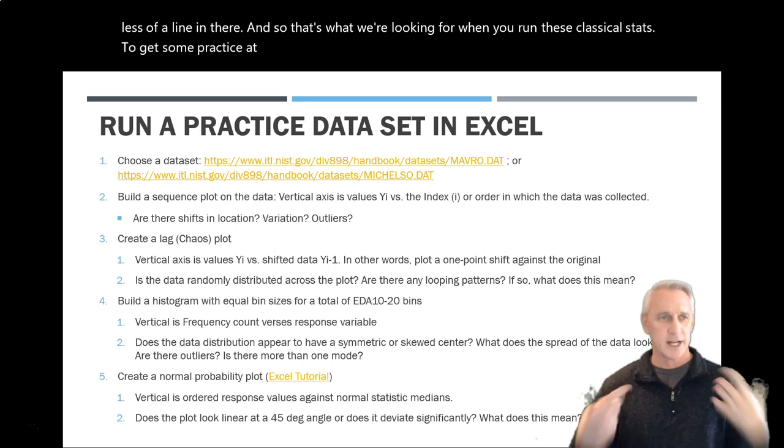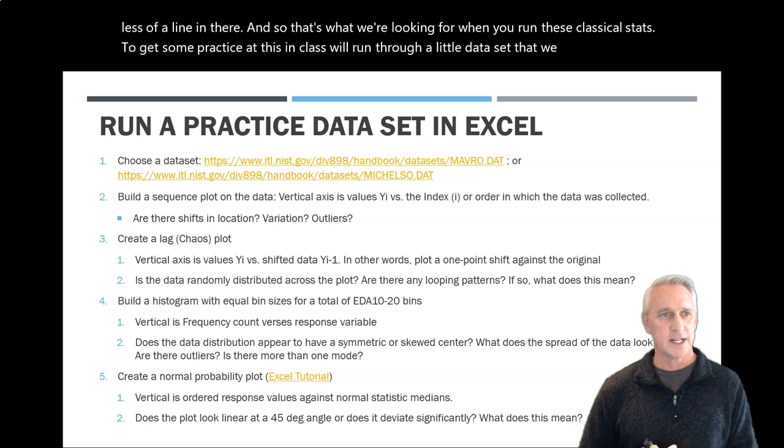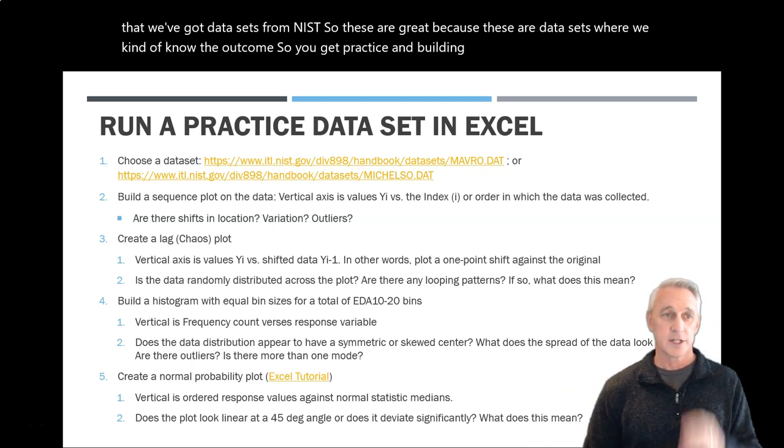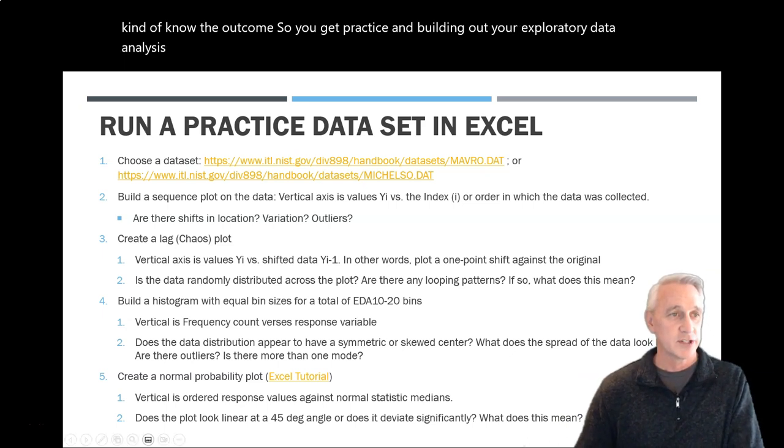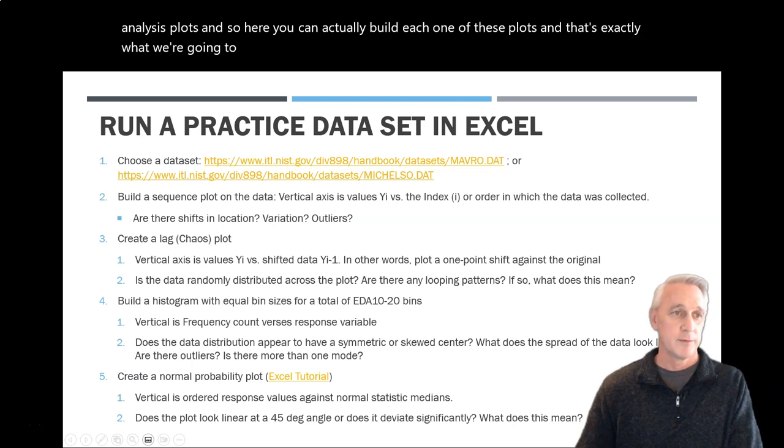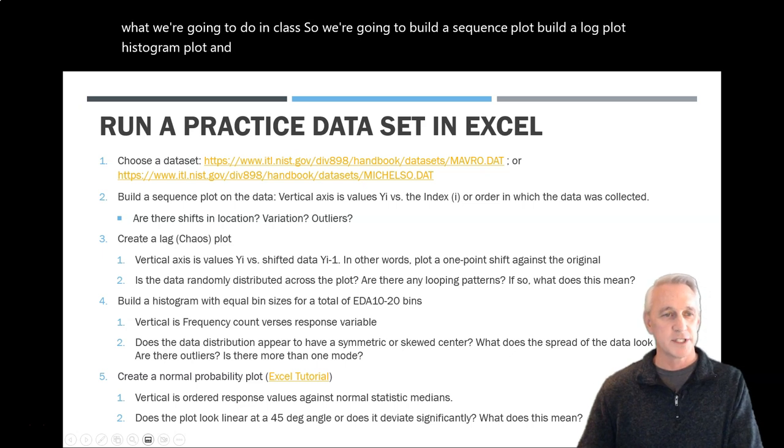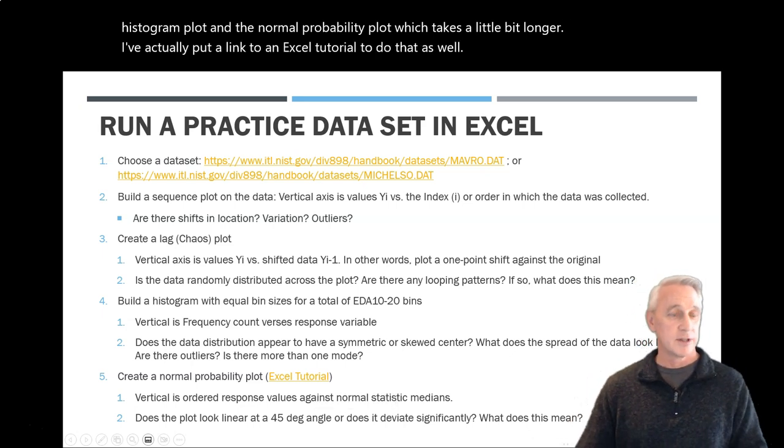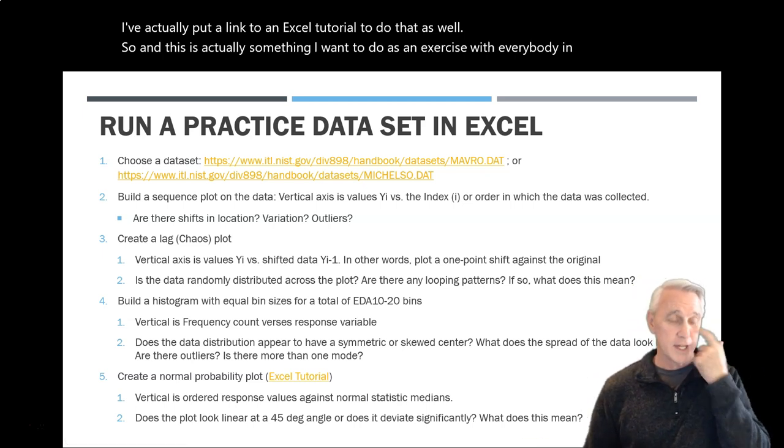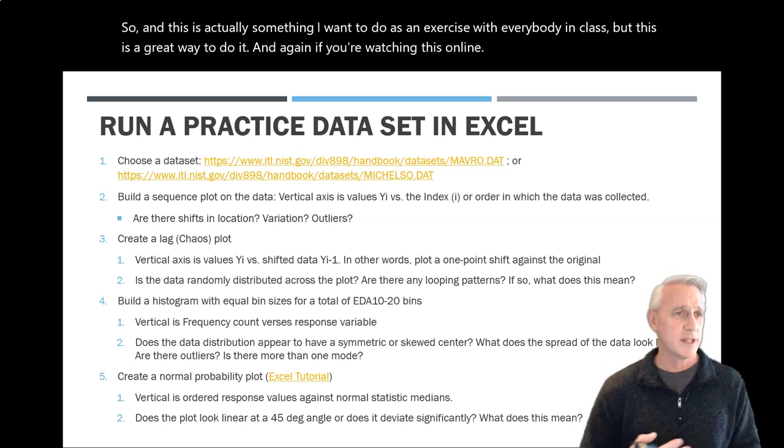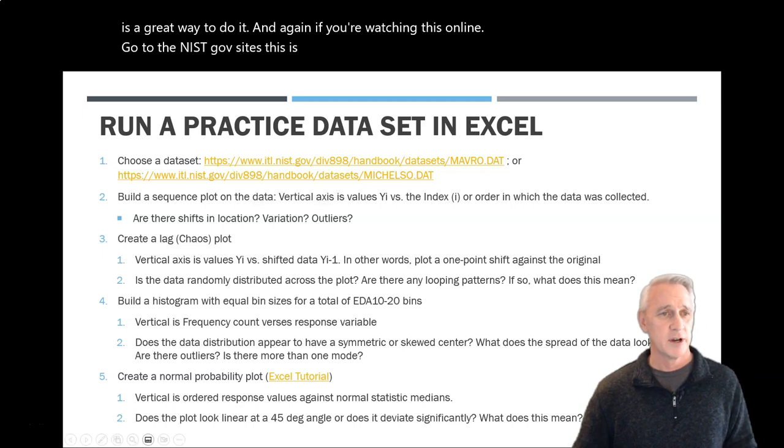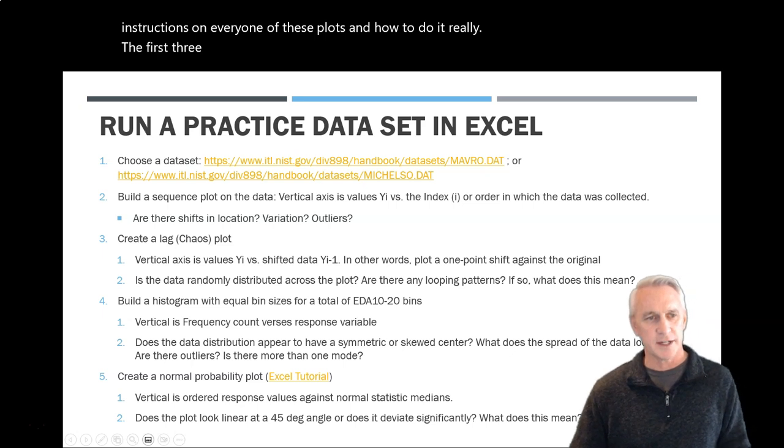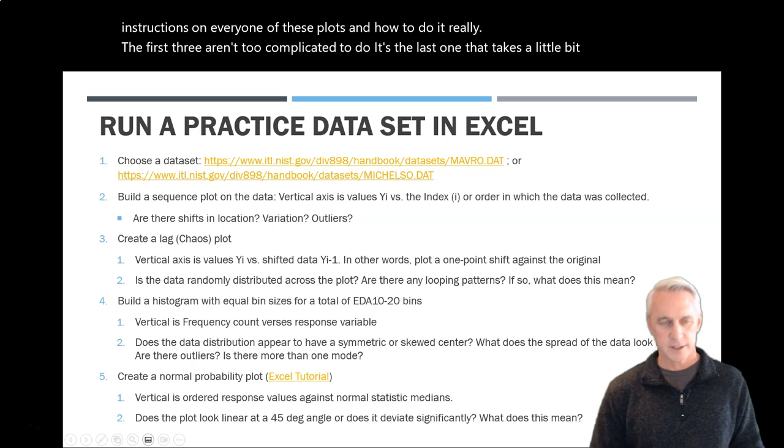To get some practice at this, in class we'll run through a little dataset that we can download, that we've got datasets from NIST. So these are great because these are datasets where we kind of know the outcomes. So you get practice in building out your exploratory data analysis plots. And so here you can actually build each one of these plots. And that's exactly what we're going to do in class. So we're going to build a sequence plot, build a lag plot, histogram plot, and the normal probability plot, which takes a little bit longer. I've actually put a link to an Excel tutorial to do that as well. And this is actually something I want to do as an exercise with everybody in class. But this is a great way to do it. And again, if you're watching this online, go to the NIST.gov sites. This is actually where the datasets are, but they actually give you instructions on every one of these plots and how to do it. Really, the first three aren't too complicated to do. It's the last one that takes a little bit more time and effort to do. So that's why I put the tutorial up there.